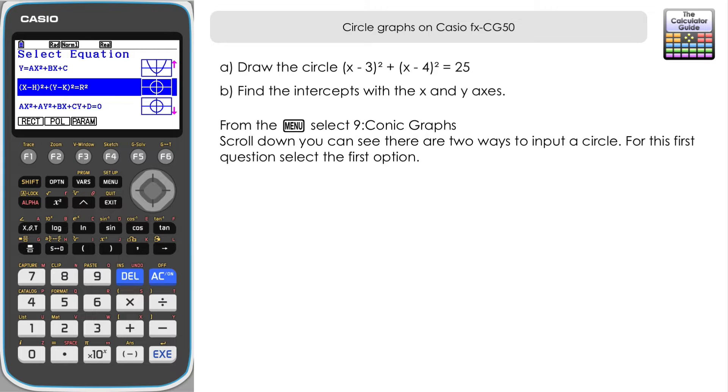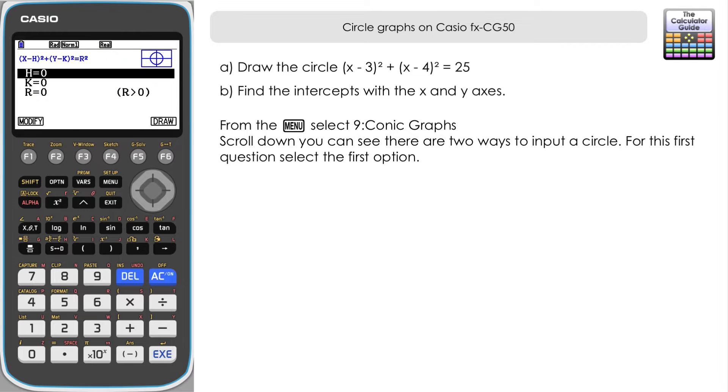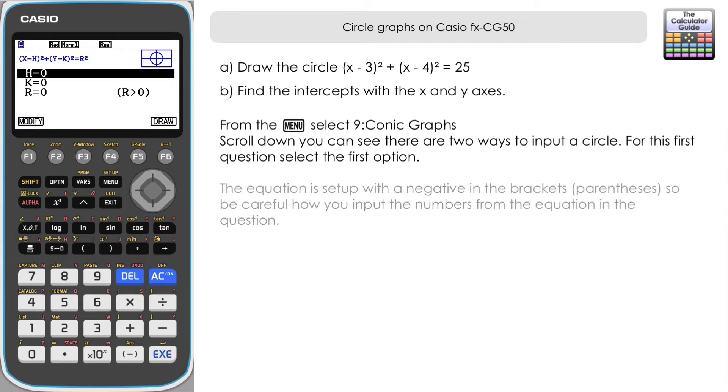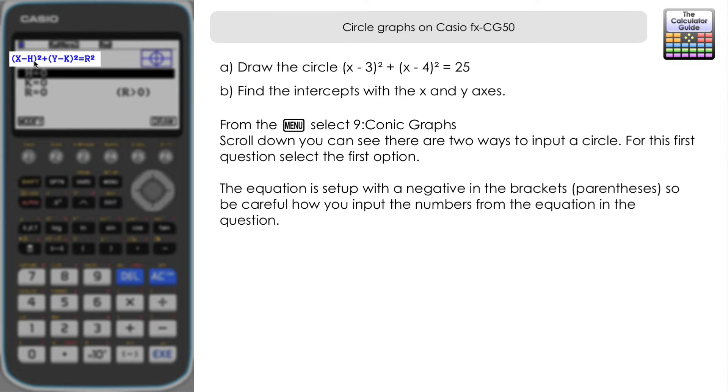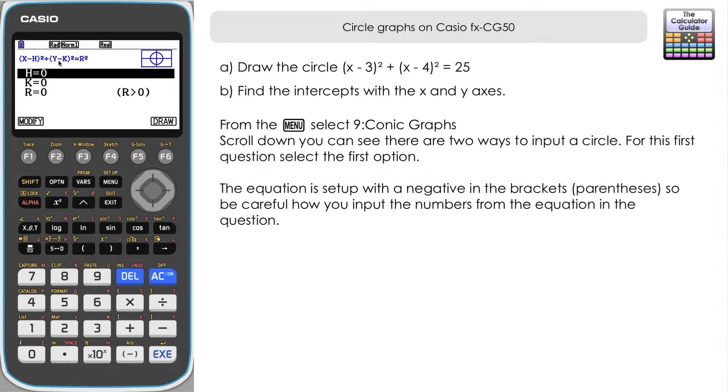Now the question that we have matches the first of these choices here. If we press execute to go into there you can see that the setup for the equation of the circle very closely matches how we're given the equation of the circle in the question. One thing to note as well is that the preset is also negative here. We've got x minus h, we've got y minus k. So it's already set up with a negative so we just want to input the actual values here.